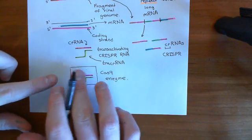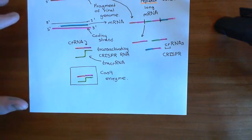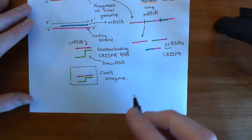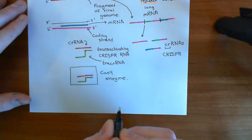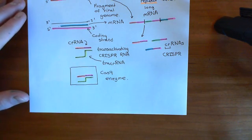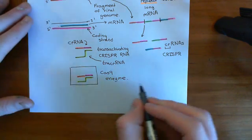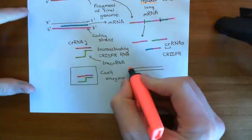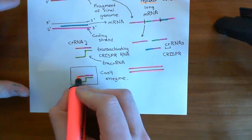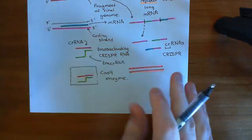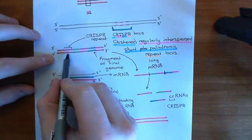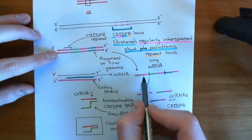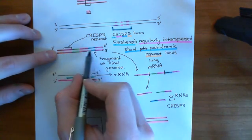You have these Cas9 enzymes loaded with these complexes, sitting in the bacterial cell just waiting for that viral genome to dare to enter the cell again. Let's say this cell does get reinfected with the same bacteriophage that originally the mother cell long ago got infected with and survived. What's going to happen now is this long piece of double-stranded DNA from the virus is going to come in. Some portion of this is complementary to this mRNA here.